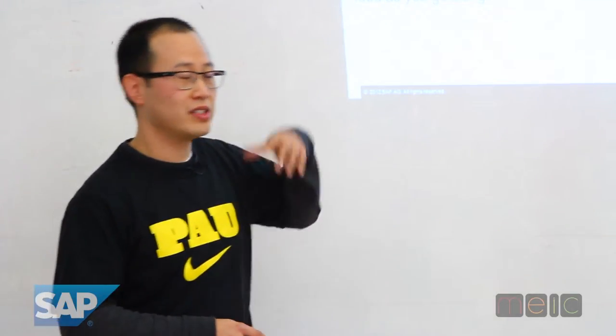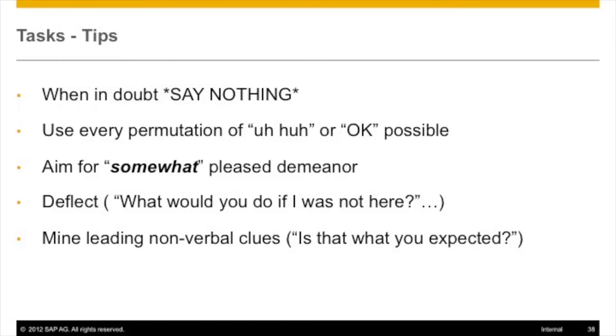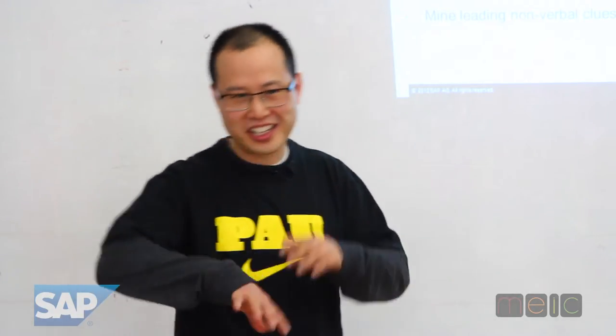Now moving to tasks — we're going to level set and then give you three tasks. Here are the tips for a task. When in doubt, say nothing. You can't get yourself wrong. If you have nothing good to say, don't say anything. If you're worried about saying something that colors the testing, don't say it. Because once you let the cat out of the bag, it's hard to take it back. So if you have any gut feeling asking should I say it — error on the side of don't say it.